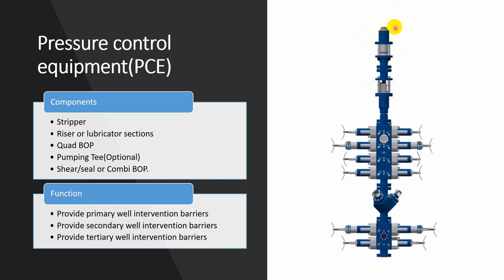The stripper is the first or primary barrier of the coiltube. If this primary barrier fails and we have a leak, we go to the secondary barrier of the coiltube: the quad BOP. It has a blind ram, shear ram, slip ram, and pipe ram. We close the pipe ram to seal around the coiltube and fix the leak, then return to normal operation.